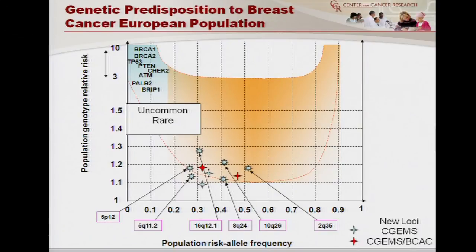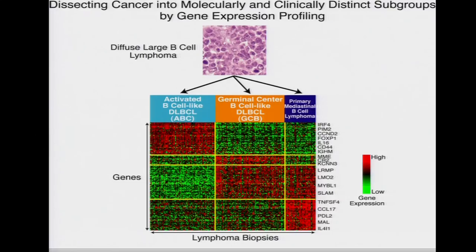So in summary: the rare, high-risk variants like BRCA are very uncommon but clearly actionable today, while the more common alleles we've identified through GWAS have much lower individual risk and we don't yet know what action to take.